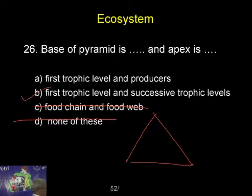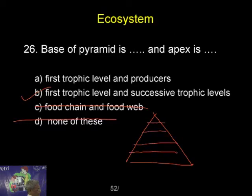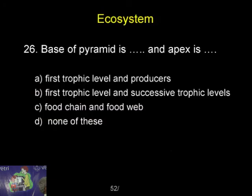The first trophic level is the producers, and then you have successive trophic levels built one above another. So B is the right answer — you got it.